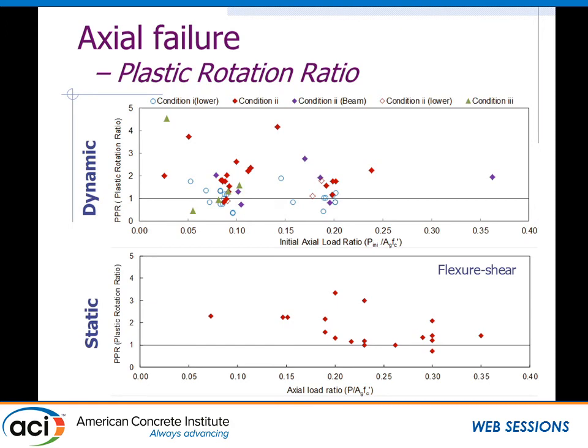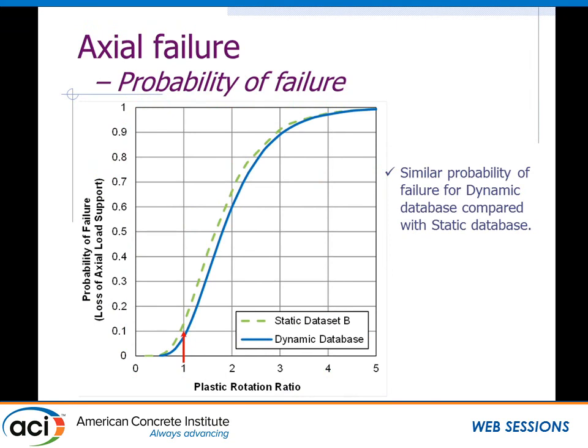Developing those fragility curves to compare, we see that the static and dynamic datasets are actually quite similar for axial failure. What this implies is that while we're conservative on shear — meaning columns are going to larger drifts before shear failure — we're right on or nearly the same for axial failure. That means shear and axial failure are getting closer and closer together for these dynamic tests, which is potentially a concern.